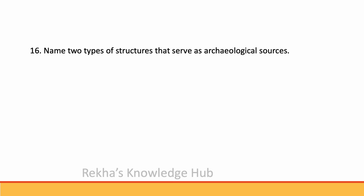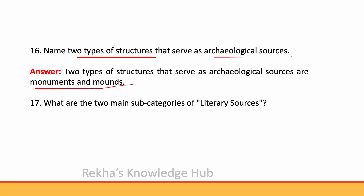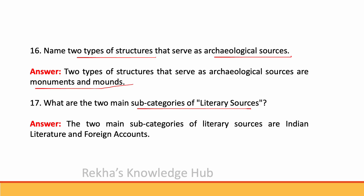Name two types of structures that serve as archaeological sources. Two types of structures that serve as archaeological sources are monuments and mounds. The two main subcategories of literary sources are Indian literature and foreign accounts.